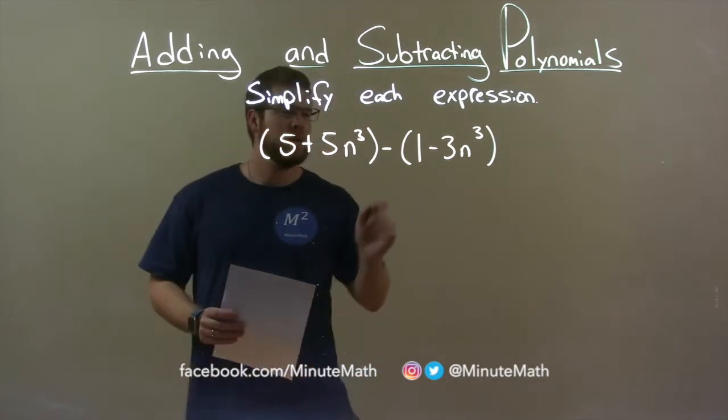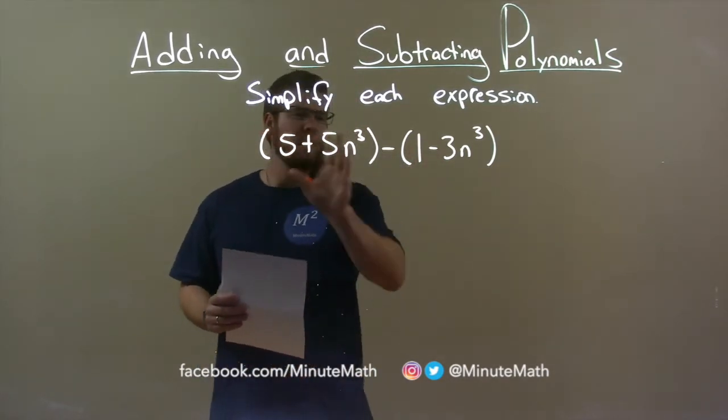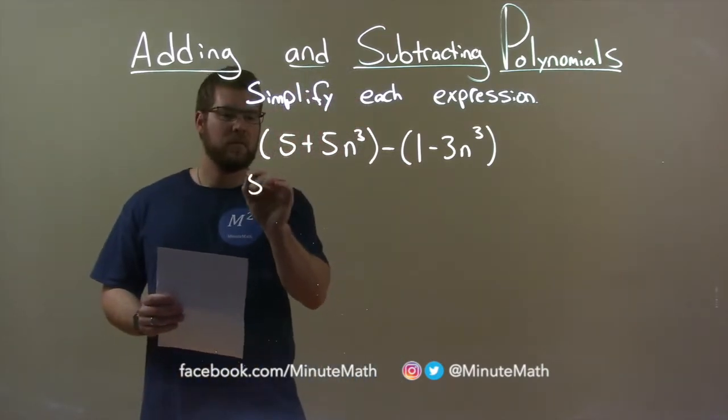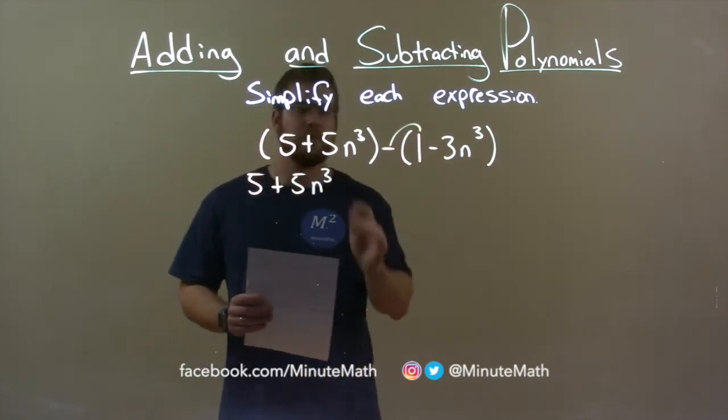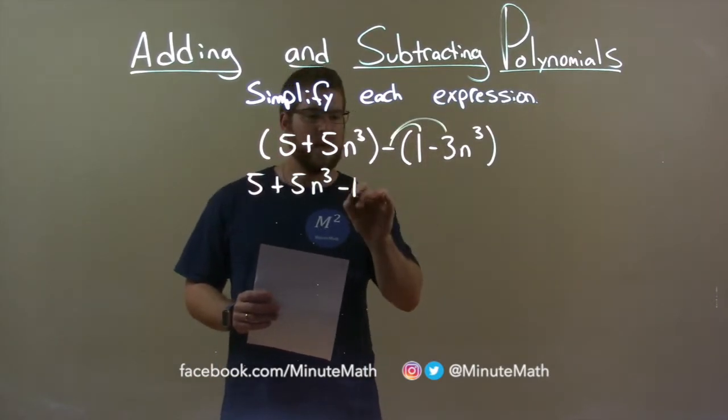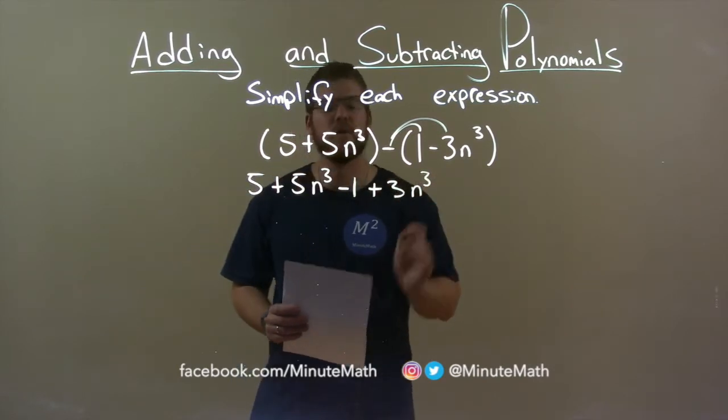Well, first thing I'd like to do is I'm going to distribute this minus sign to the second parenthesis. There's nothing within each parenthesis that we can simplify, so we can rewrite this now as 5 plus 5n to the third. Now when we distribute the minus sign, we have a minus of 1, and then the minus again to a minus 3n makes that a positive 3n to the third.